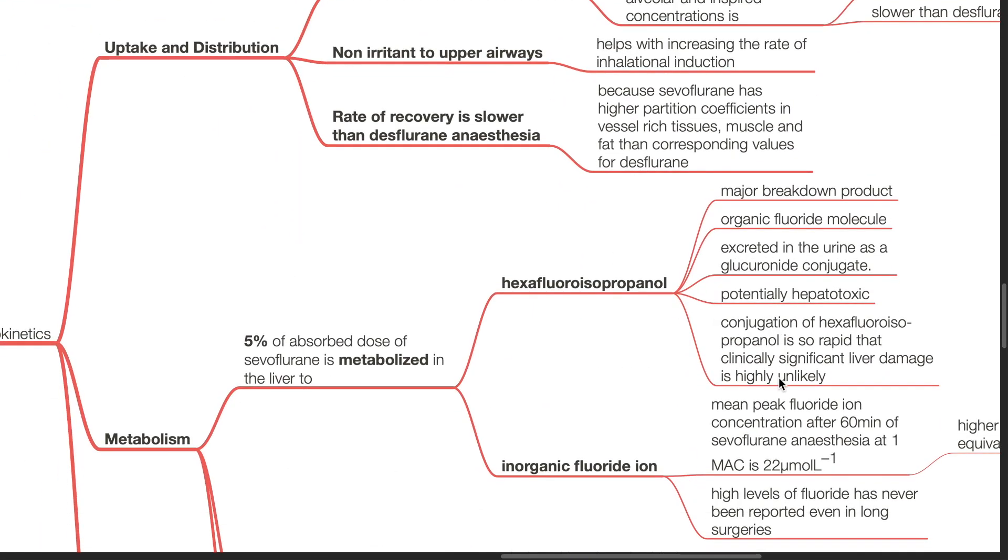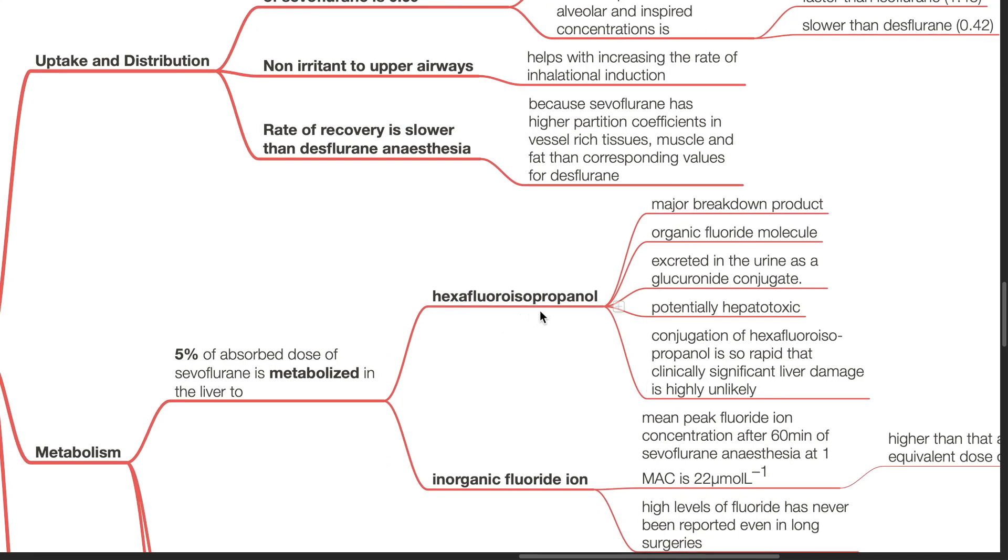Metabolism. 5% of absorbed dose of Sevoflurane is metabolized in the liver to hexafluoroisopropanol and inorganic fluoride ions. Hexafluoroisopropanol is the major breakdown product. It is an organic fluoride molecule and is excreted in the urine as a glucuronide conjugate. It is potentially hepatotoxic. Conjugation of hexafluoroisopropanol is so rapid that clinically significant liver damage is highly unlikely.